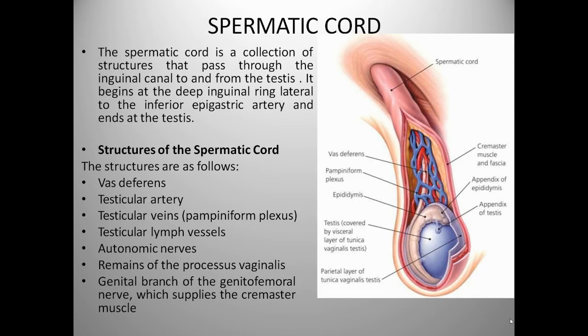Now we will see the spermatic cord. It is a collection of structures that passes through the inguinal canal to and from the testis. It begins at the deep inguinal ring, lateral to the inferior epigastric artery, and ends at the testis. The structures of the spermatic cord are the vas deferens, testicular artery, testicular vein, testicular lymphatics, autonomic nerves, remains of the processus vaginalis, and the genital branch of the genitofemoral nerve, which supplies the cremaster muscle.